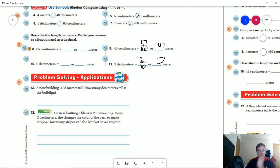And then going on to here, number 12, a new building is 25 meters tall, we can multiply our number of meters by 10 to get the answer. And that would give us 250 decimeters.